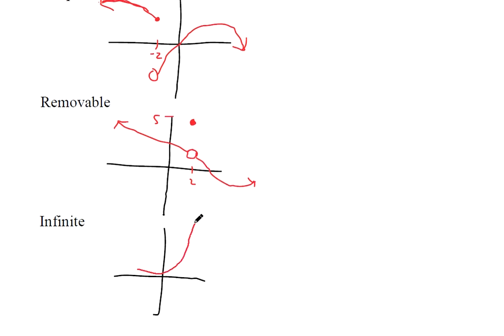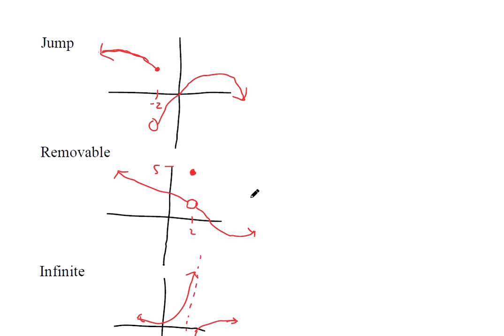Infinite discontinuity you've seen before in pre-calculus would be if you have some sort of asymptote going on. This is an infinite discontinuity because we never reach this vertical asymptote.